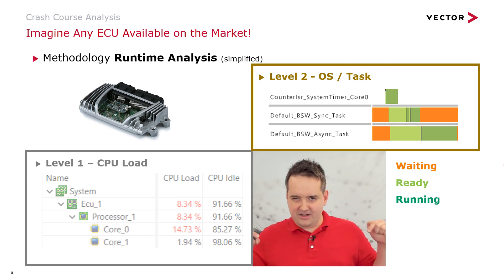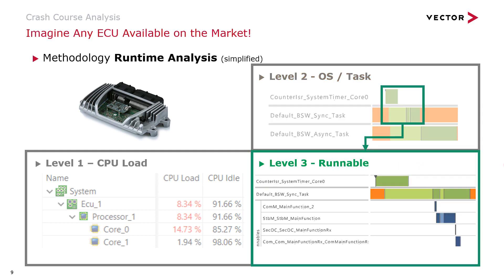Now let's get one level deeper and go to level 3. We are also interested in what kind of runnable is running. We apply the runnable analysis and are able to tell which function is running. In this example, you see first the COMM main function running, then the SDPM, then the SECOC, and then the COMM Rx. With that, we are able to tell you more about the runtime behavior of this ECU.